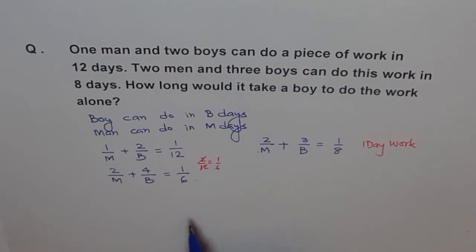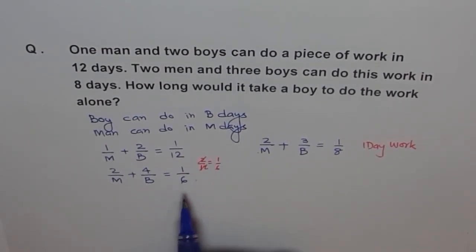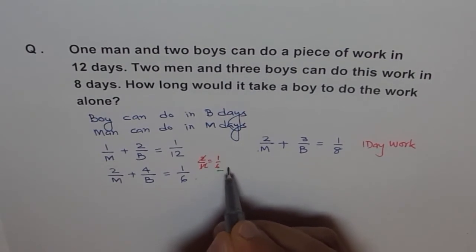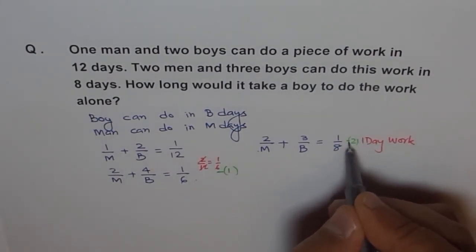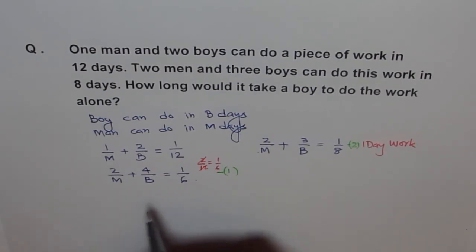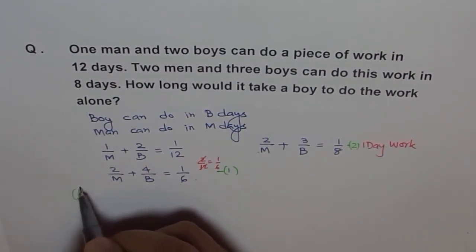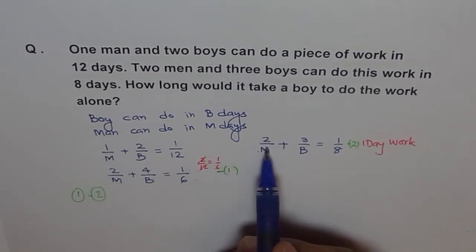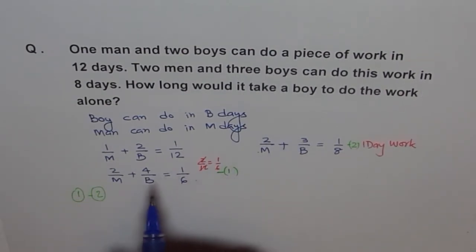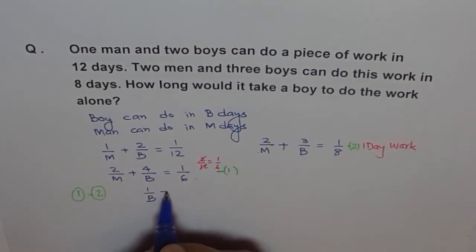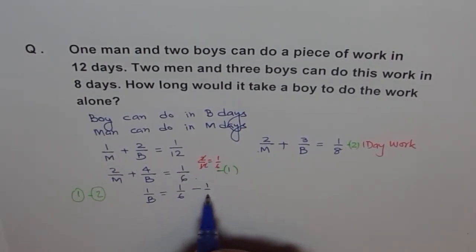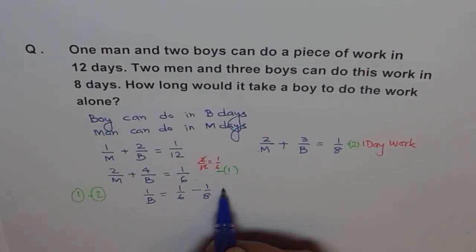Now you look into these 2 equations, we got 2 over M and 2 over M. So if I take away from here that equation, then my job is simpler. Let's say this is my equation number 1 and let's say this is my equation number 2. So what I am trying to do is, I am trying to do 1 take away 2 equations. So this take away this is 0, 4B take away 3B is 1 over B. Equals to 1 over 6 take away 1 over 8. 1 over 6 over 8, that's good.